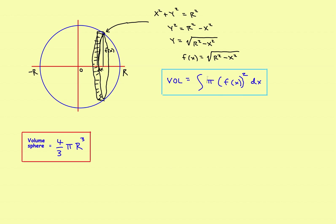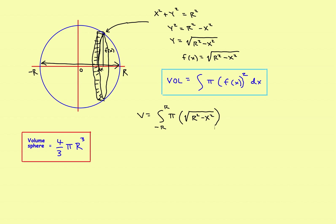The volume of a single disk has radius f of x and thickness dx. Setting up the integral, we integrate from negative r to r, so: Volume equals the integral from negative r to r of pi times the square root of r squared minus x squared, and that entire expression is squared, dx.